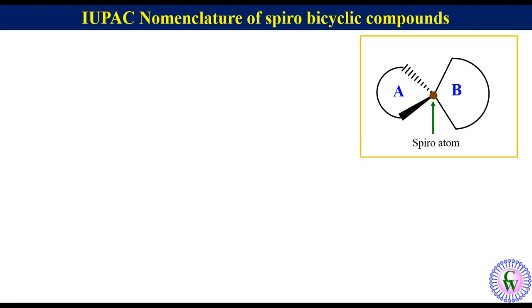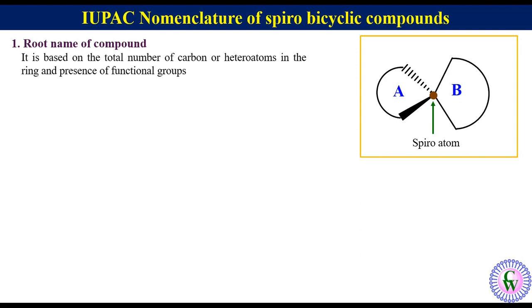We should keep the following points in mind for the IUPAC naming of spirobicyclic compounds. First, the root name of the compound — it is based on the total number of carbon or heteroatoms in the ring and the presence of functional groups.